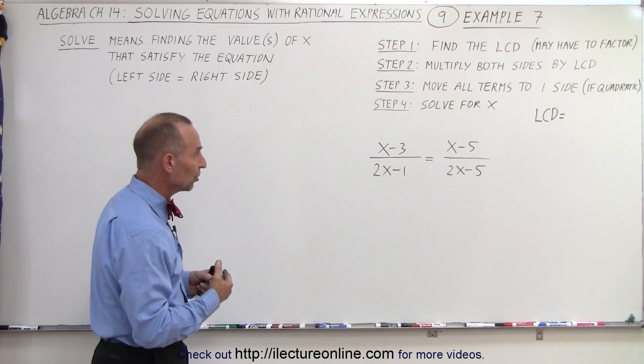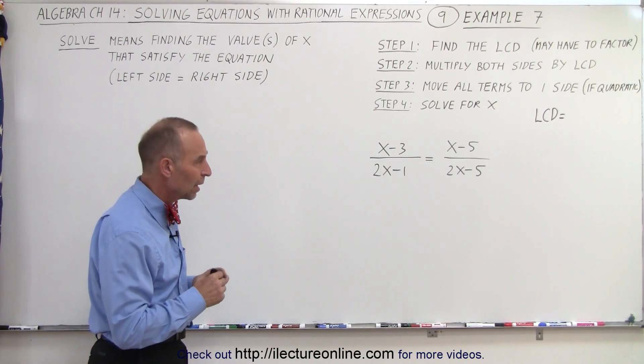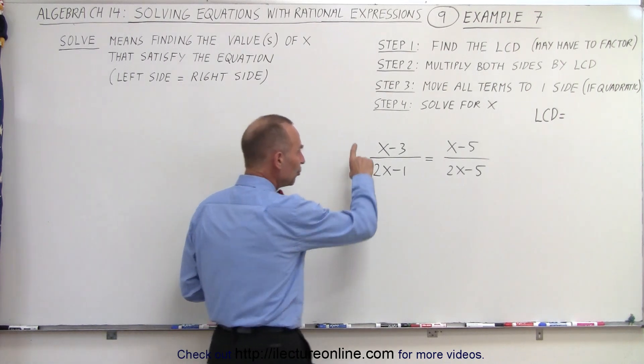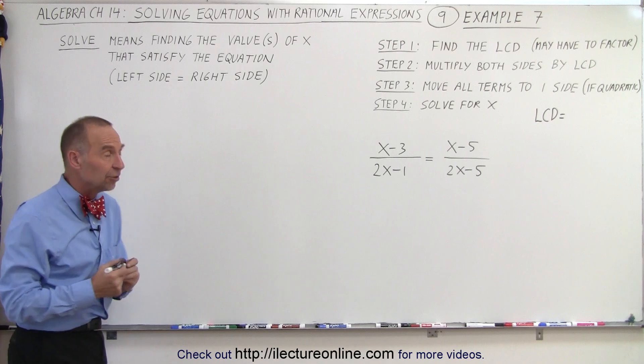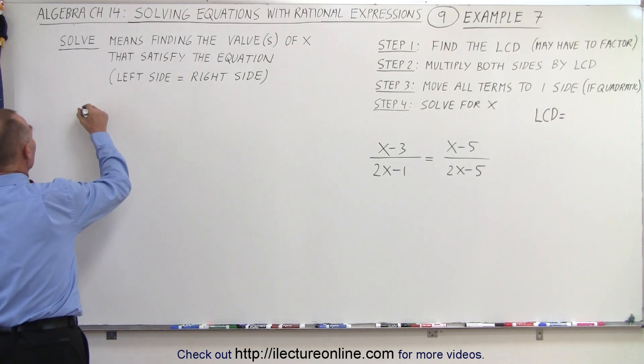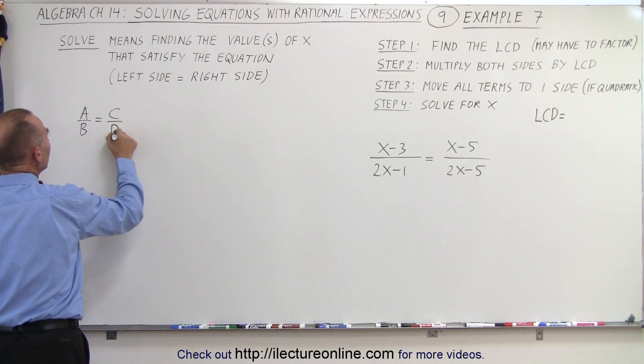We see that we have an equation with rational expressions, so we're going to find the lowest common denominator. However, since we have two fractions that equal each other, we could employ a technique that's a little bit easier. We can say that a over b equals c over d.